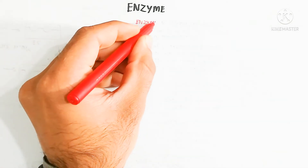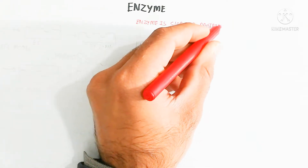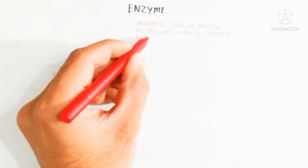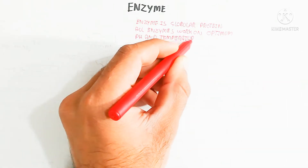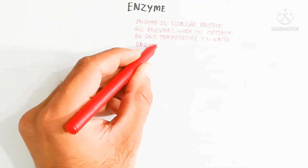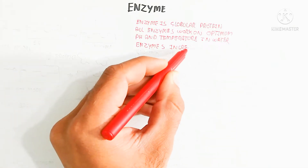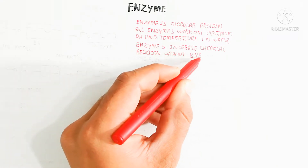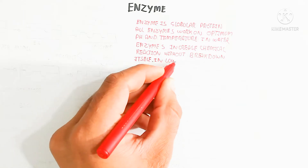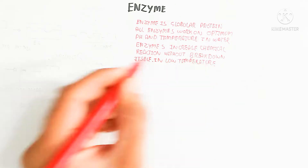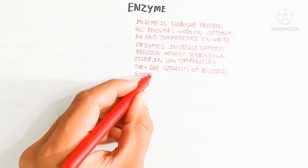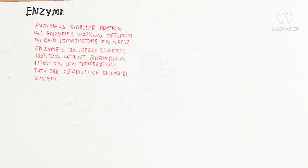Enzyme is a globular protein. All enzymes work at an optimum pH and optimum temperature in water, for hydrolyzing bonds. They are made up of polypeptides with a three-dimensional structure. Enzymes increase chemical reactions without breaking down themselves, even at low temperatures. They are the catalysts of biological systems and reduce the activation energy.